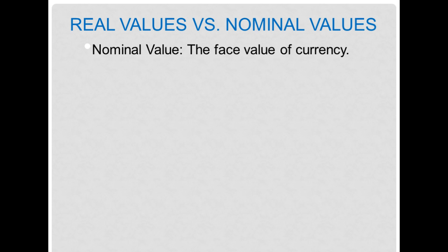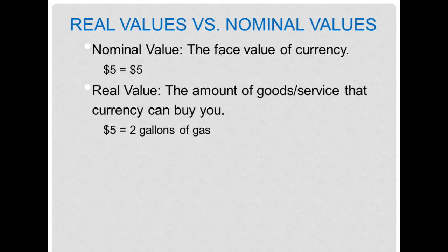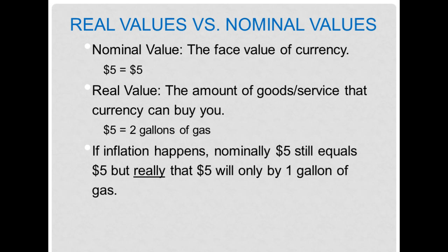There's a distinction between nominal values and real values. In nominal terms, $5 equals $5. But the real value — which is the one we're going to focus on — is the amount of goods and services that a currency can buy you. In real terms, $5 might equal two gallons of gasoline. If in the future that $5 can't buy as much gasoline, I know inflation has occurred. Even though the $5 still looks the same nominally, in real terms it's worth less. Nominally, $5 is still $5 — but in real terms, it might only buy one gallon of gasoline.